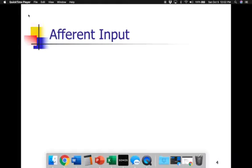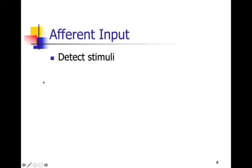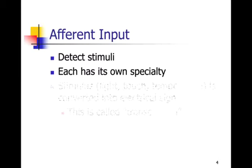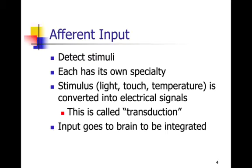Recall that your stimuli or your sensory stimuli will be detected, and each type of stimulus has to have a specific receptor. So we have specific receptors to detect the different types of stimuli, and different types of stimuli can be light, touch, temperature, odor, etc. These stimuli are converted into electrical signals, and that process of taking the stimulus and converting it into an electrical signal is called transduction.